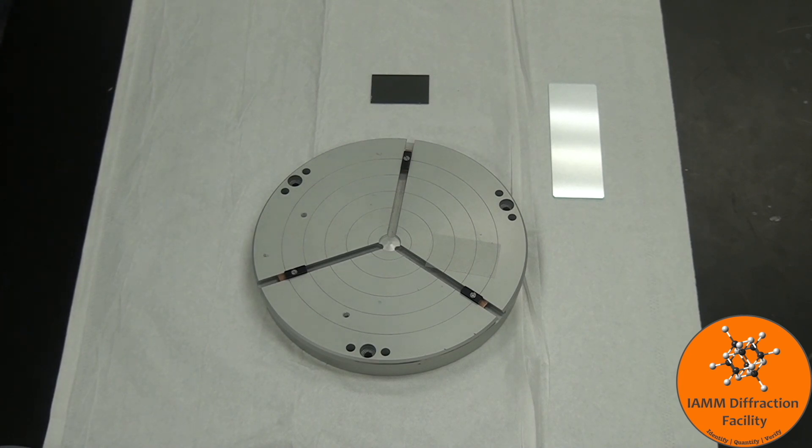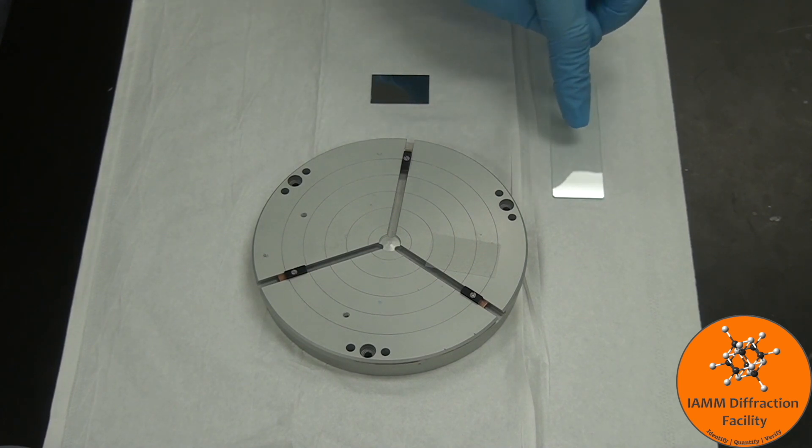If you are going to perform grazing incidence x-ray diffraction on smaller samples such as this or even smaller, my recommendation to make life easier would be to use double-sided tape to stick it to a slide.